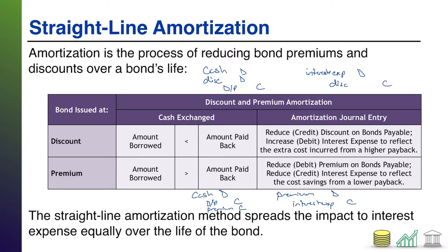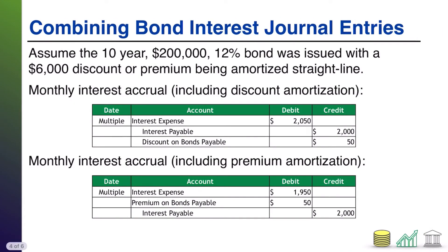Now, there are two ways you can do this under US GAAP. One is the straight-line amortization method, and one is called the effective interest method. The effective interest method is actually the preferred method — it's also the more difficult of the two, and I'm not going to talk about that one in this video. This video is going to focus strictly on the straight-line method, which, just like straight-line depreciation for fixed assets, simply takes that premium or discount and spreads it out equally over the life of the bond.